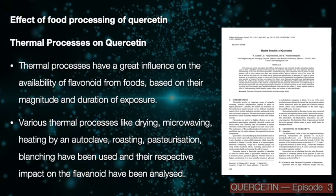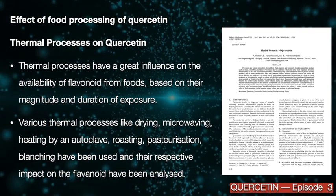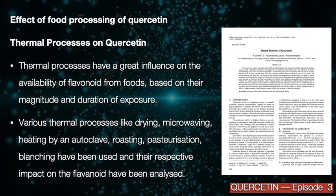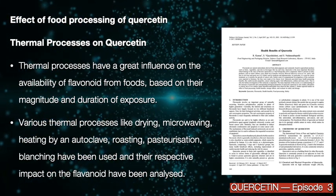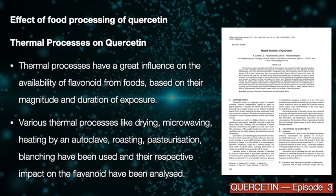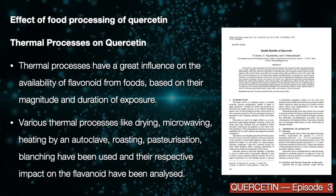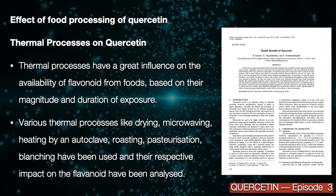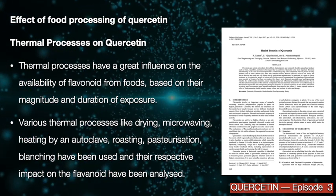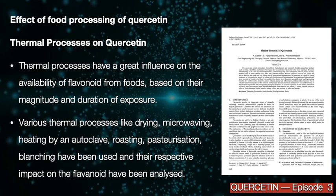Effect of food processing on quercetin — thermal processes. Thermal processes have a great influence on the availability of flavonoids from foods, based on their magnitude and duration of exposure. Various thermal processes like drying, microwaving, heating by an autoclave, roasting, pasteurization, and blanching have been used, and their respective impact on flavonoids has been analyzed.